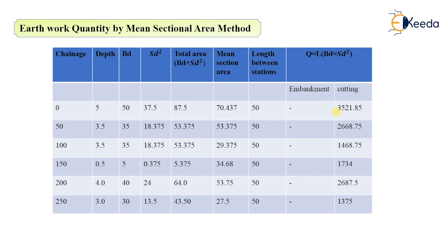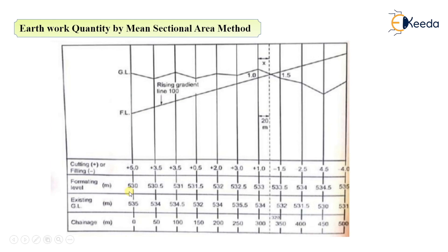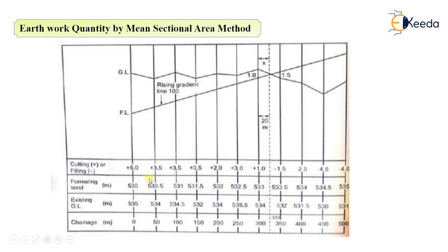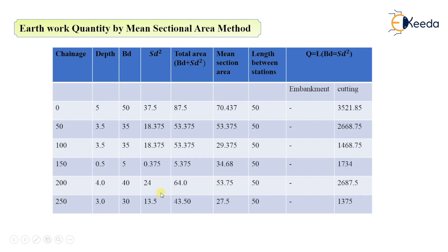At 0 meter chainage, the depth is 5 meters and it is in cutting, because the existing ground level is above the formation or gradient line. At 50 meters the depth is 3.5, at 100 meters it is also 3.5, and at other chainages we have calculated the depth as the difference between ground level and formation level.